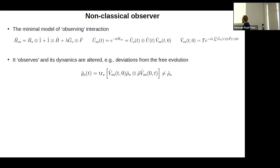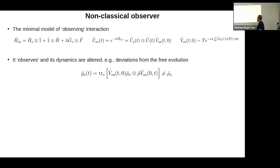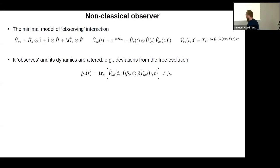When this non-classical observer interacts with observable F, there will be some changes in the dynamics. The simplest and most intuitive way to quantify those changes is to look at the interaction picture of the reduced state of O. We take a product initial state — the initial state of O times the initial state of S — with our interaction picture evolution operators and trace over S only. If the interaction were trivial, nothing would happen and we'd just get rho_O. But with non-trivial interaction, there will be some non-trivial change.